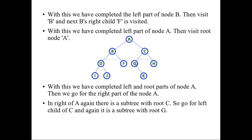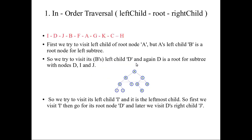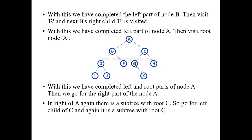The right child is C, which is again the root of G and H. We go to the left child of C. G is the root node of K, which has no left child, so we write G and then its right child K. Once K is written, the left subtree of C is complete. We write C, then visit its right child H. The right subtree of root A is now complete.